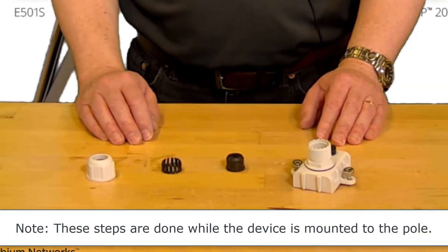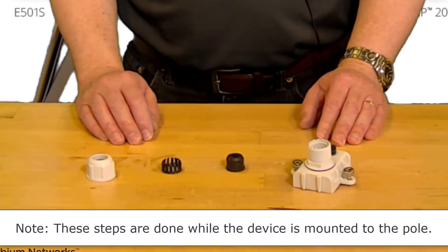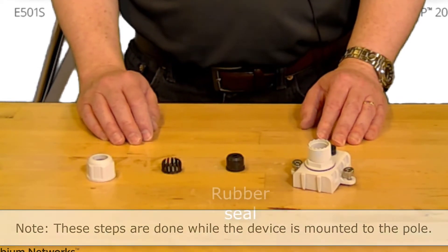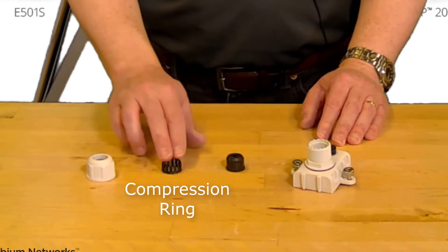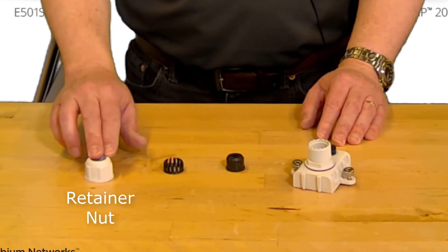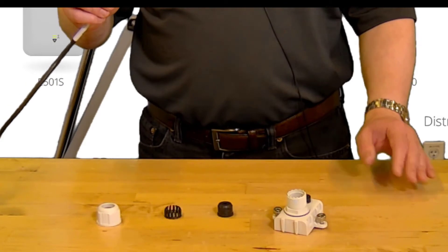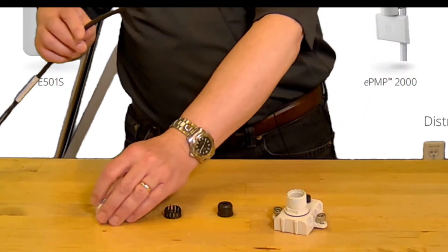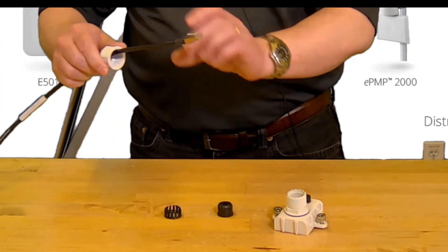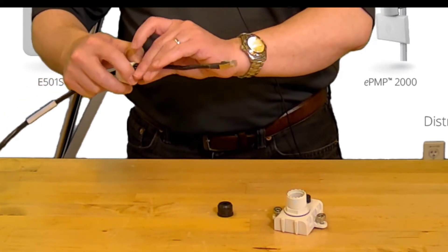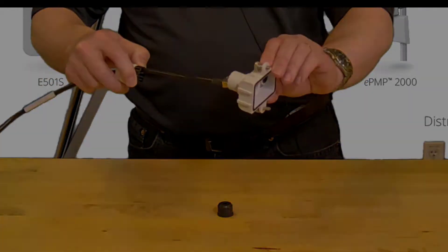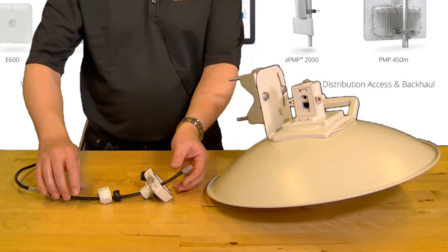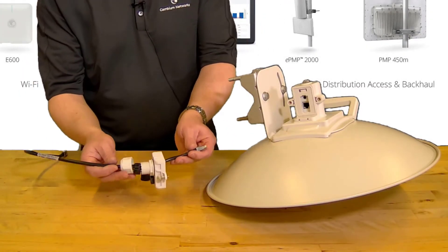Finally, we will install the main RJ45 ethernet cable using the cable gland provided. Disassemble the gland into its component parts: the rubber seal, compression ring, and the retainer nut. First pass the ethernet cable through the retainer nut, followed by the compression ring, and then the sealed cover. Plug the ethernet cable into the main port of the subscriber unit.